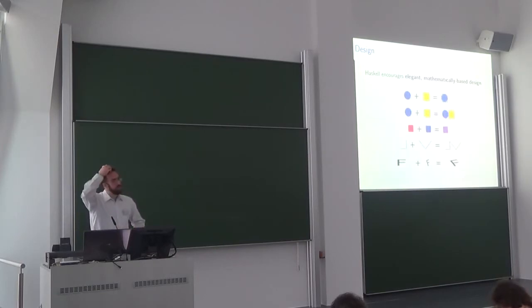So one particular example, diagrams, a lot of it is based around this theory of monoids, which basically you can think of as how to combine things in nice ways that satisfy various laws. So most things in diagrams can be combined in various ways. So you can put two diagrams on top of each other, or you can put them next to each other. You can combine colors in various ways. You can combine paths. You can, I think on the bottom, that's, you can combine transformations, right? And this all works in this same interface that talks about combining things.